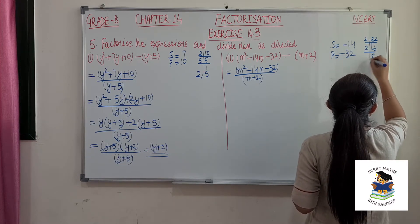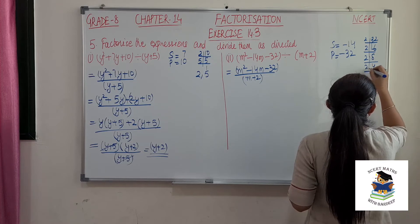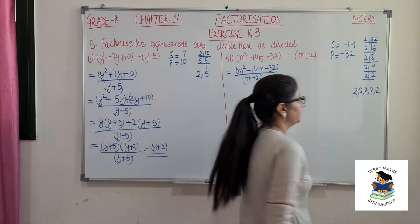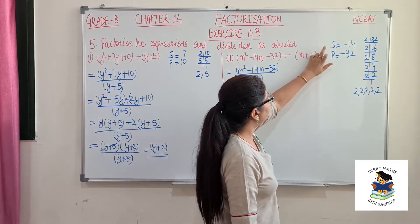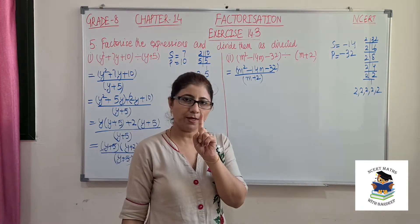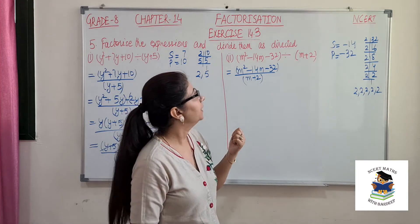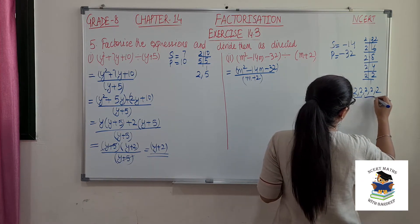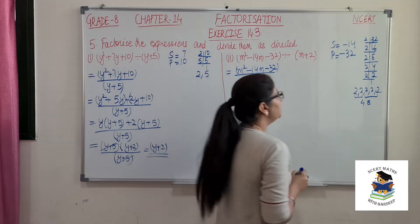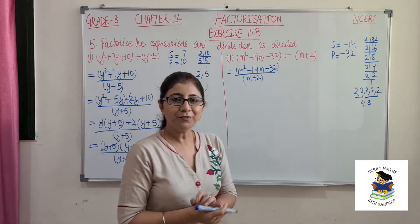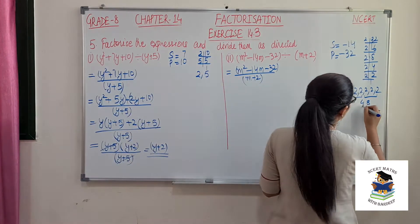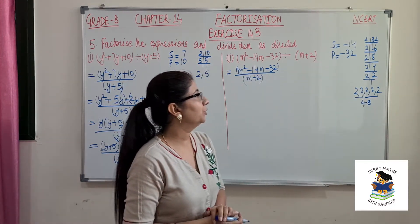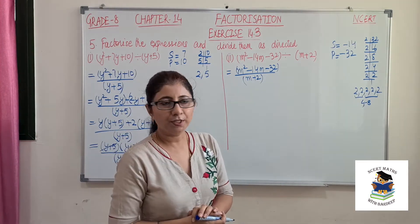Let's factorize 32. Since the product is negative, one number must be negative, and their sum must be minus 14. Trying 4 and 8: minus 8 plus 4 gives minus 4, which is not minus 14. Let's try 16 and 2: since the sum is negative, the bigger number takes the negative sign. Minus 16 plus 2 gives minus 14. These are the correct factors.